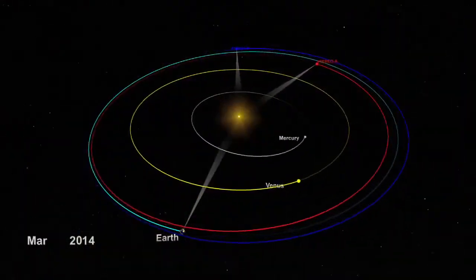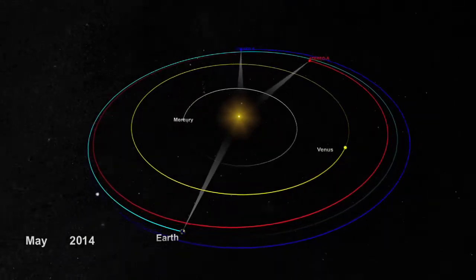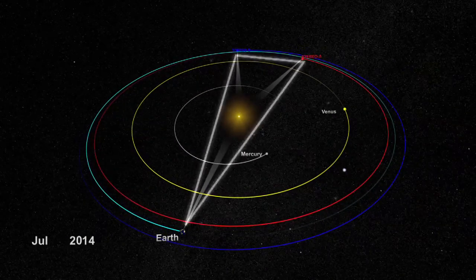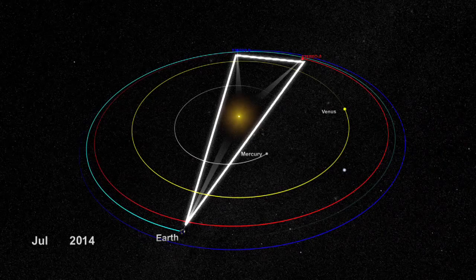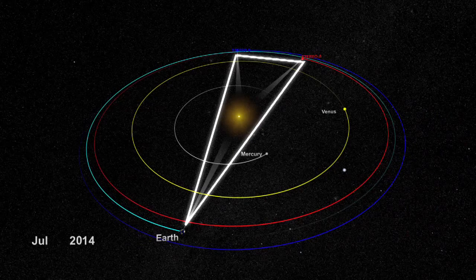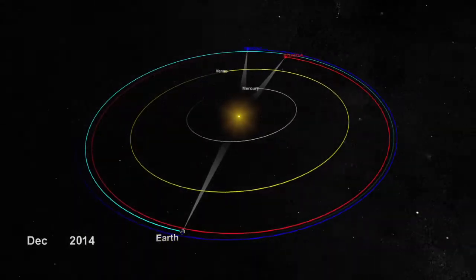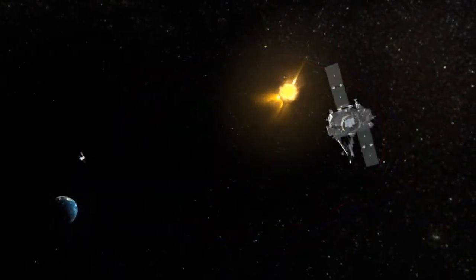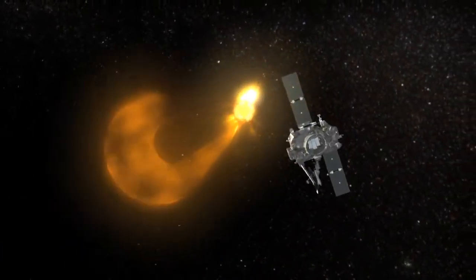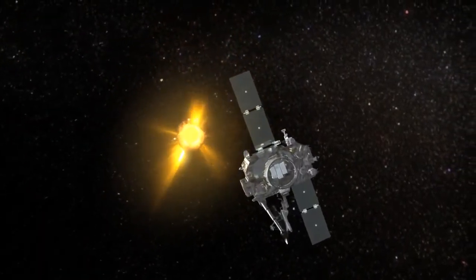Today we're talking about what's going on with the STEREO mission over the next year and a half or so. That includes both the period of superior conjunction when the spacecraft are on the other side of the sun from the Earth, and also a longer period on either side of that when the high gain antenna will have to be off-pointed from its normal pointing towards the Earth because of a thermal problem.